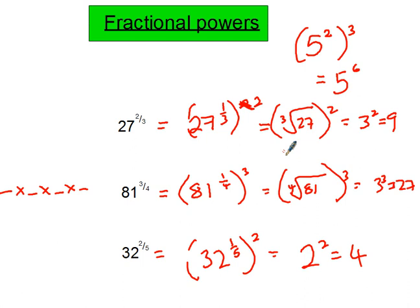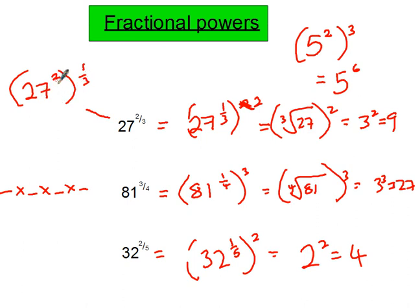Before finishing, some people ask whether you could instead square 27 first and then find the cube root of that answer. The answer is yes, but imagine how much more difficult those numbers become. So when doing these, always write the unit fraction as your power inside the bracket and the numerator of the fraction as the outer power — that way you avoid working with difficult large numbers.